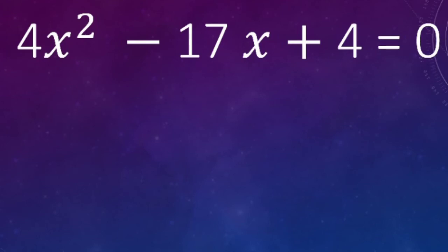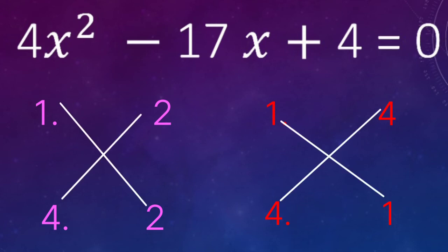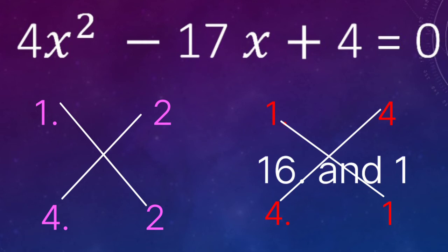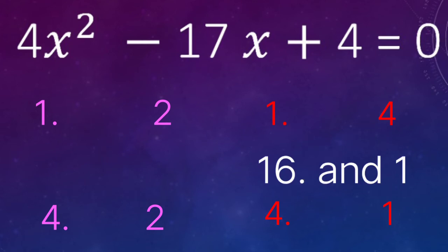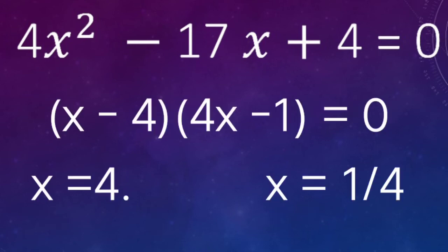Another example: 4x² − 17x + 4. The coefficient of x² gives options 1 and 4, or 2 and 2. The constant is also 4, with option 1 and 4. Using (1, 4) for both: 1×1=1 and 4×4=16 — together they make 17. Since we have minus 17, we put minus with both, giving the answer: (x − 4) and (4x − 1).